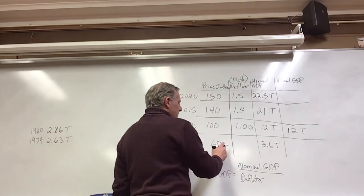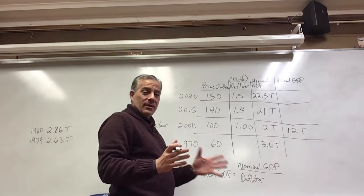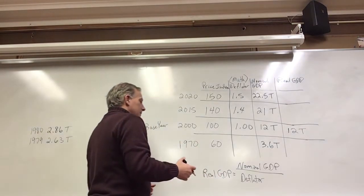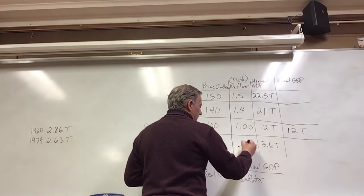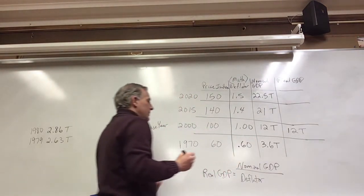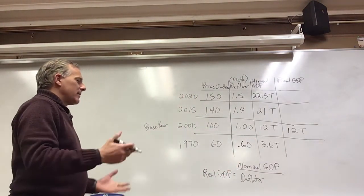Now, this one, don't get tripped up, it's not 0.06, it's not six, it's 0.6. I'm going to put 0.60 in there. So those are our deflators.